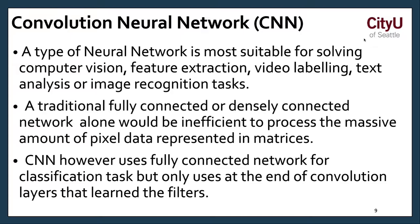Convolution neural network, it's not only for computer vision, but it's one of the usage to extract visual label, text analysis, or image recognition tasks. There's what they call the traditionally fully connected or densely connected network, but it's an inefficient process because it requires massive amount of pixel data represented in matrices. CNN, however, uses fully connected network for classification of the regression, but only uses at the end of convolution layers that learn the filters. Convolution layers first and then fully connected network.